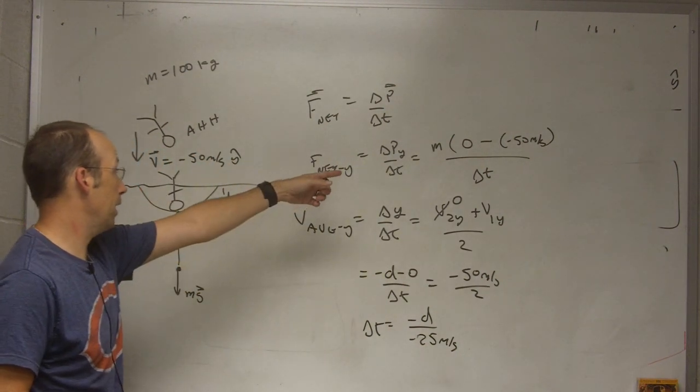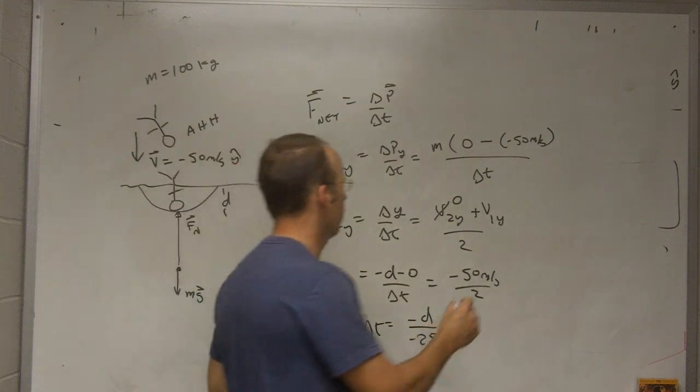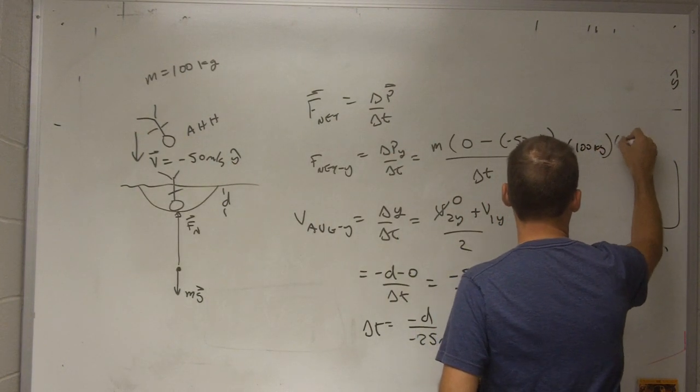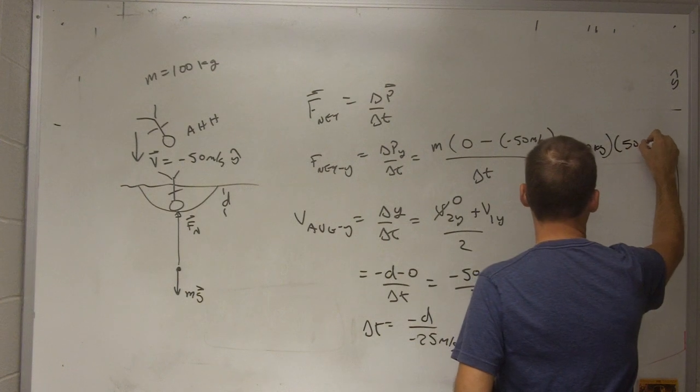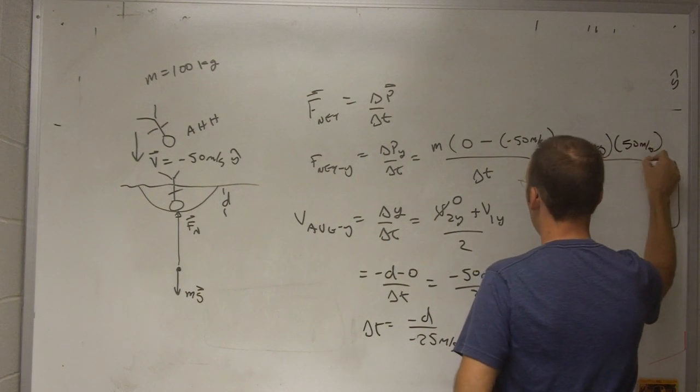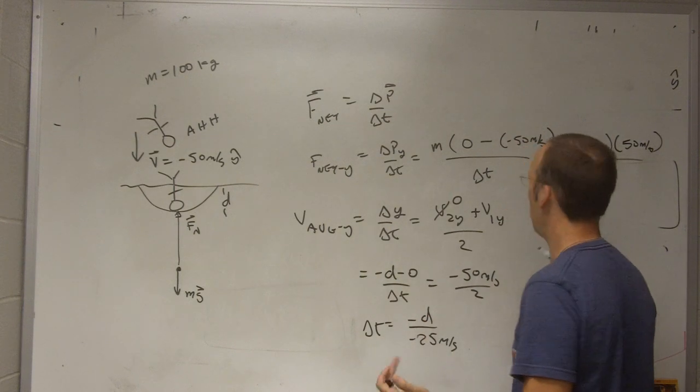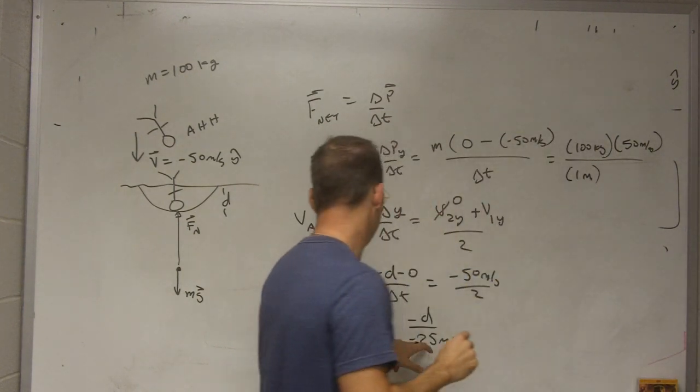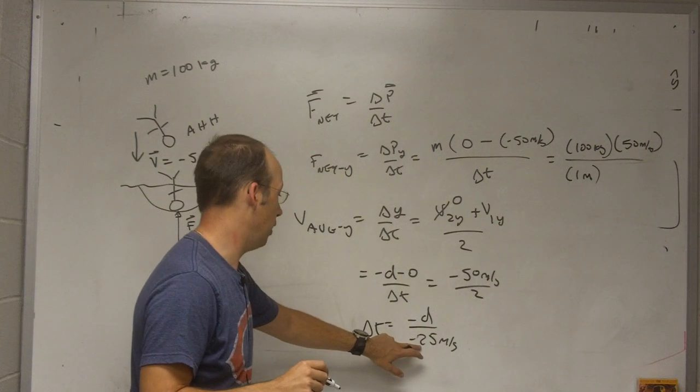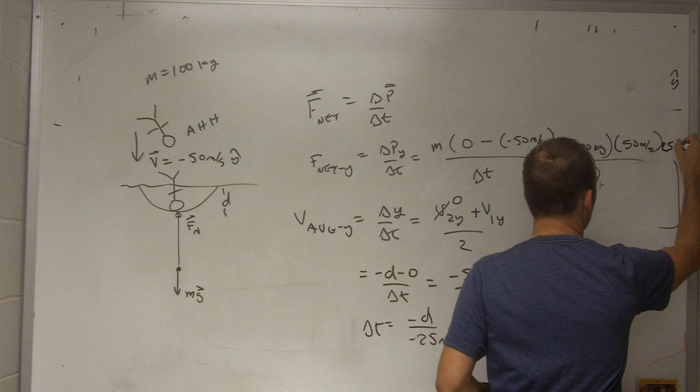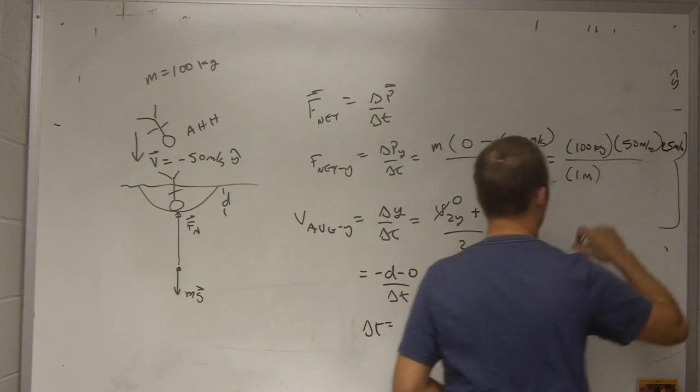So now I can just put that in here and I will get my net force. So let's put in everything we know. I have 100 kilograms. I have 50 meters per second. And then delta T is going to be a D which let me say it is 1 meter. And then I have multiplied by 25 meters per second.